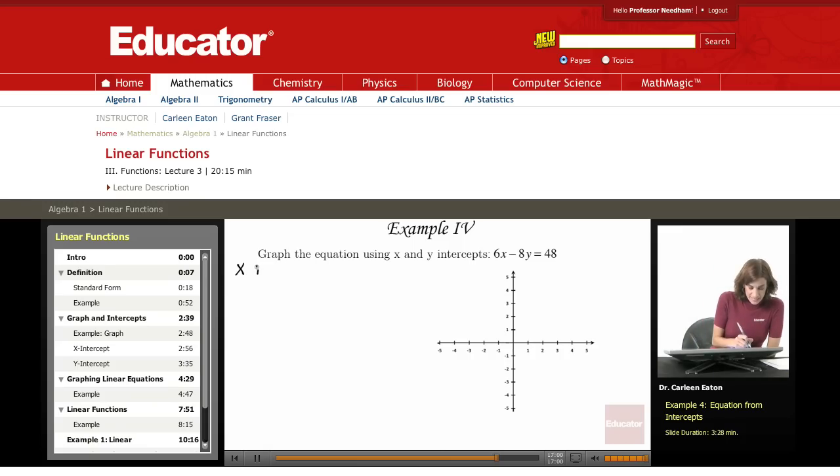First, I'm going to find the x-intercept, and I'm going to let y equals 0. My equation is 6x minus 8y equals 48. So my y value will be 0, and that's going to give me 6x minus 0 equals 48.